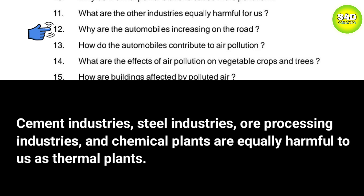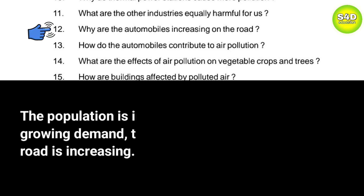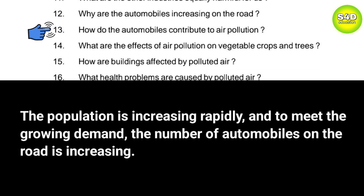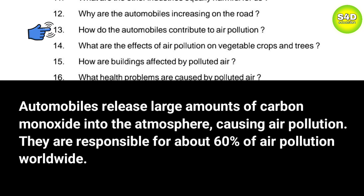Question 12: Why is the number of automobiles increasing on the road? Answer: The population is increasing rapidly and to meet the growing demand, the number of automobiles on the road is increasing. Question 13: How do automobiles contribute to air pollution? Answer: Automobiles release large amounts of carbon monoxide into the atmosphere, causing air pollution. They are responsible for about 60% of air pollution worldwide.